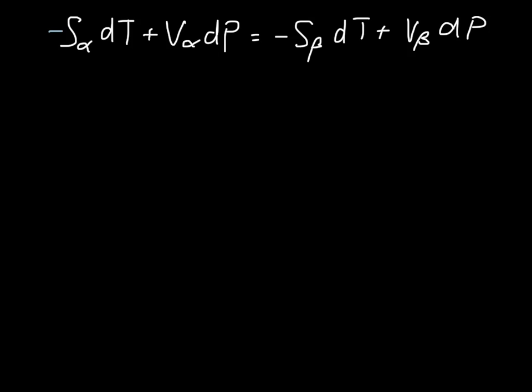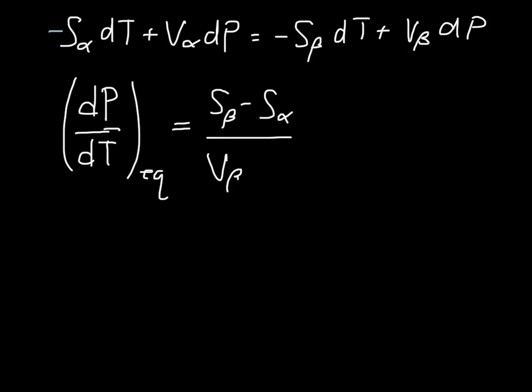We can rearrange, and we end up with an expression that says DP divided by DT, so changes in pressure that occur due to changes in temperature in order to maintain equilibrium between those two phases. This is equal to S beta minus S alpha over V beta minus V alpha, or delta S associated with the alpha to beta transition divided by delta V associated with the alpha to beta transition.